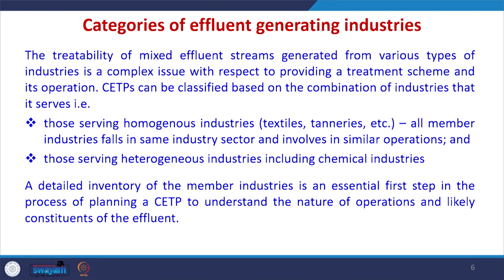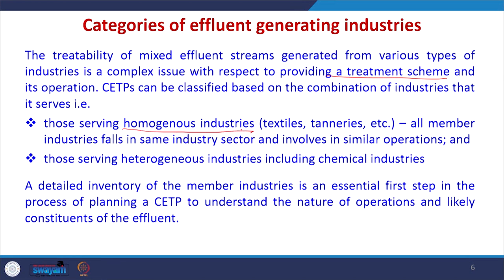The treatability of mixed effluent streams from various types of industries is a complex issue with respect to providing a treatment scheme and its operation. CETPs may be homogeneous — serving homogeneous industries like textile, where all member industries fall in the same sector — or heterogeneous, serving heterogeneous industries including chemical industries where issues may be more complex. A detailed inventory of the member industries is an essential first step in the process of planning a CETP, to understand the nature of operations and likely constituents of the effluent.